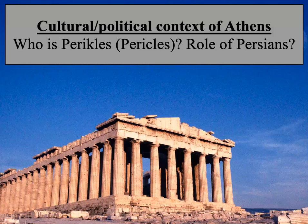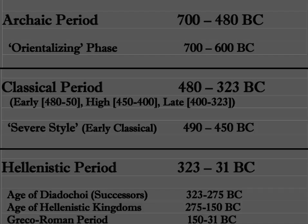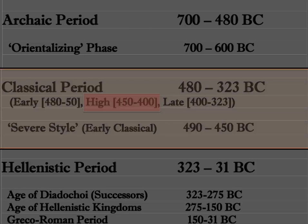The first section is the cultural and political context of Athens — who is Pericles, and the role of the Persians in what ends up happening with the building of the Acropolis and the Parthenon. When looking at ancient Greek history, we touched on some of this in our discussion of the human figure, including the classical period, severe style, and Hellenistic, as well as some archaic period early Greek sculpture. When discussing the building of the Parthenon and Pericles' rebuilding of the Acropolis, we're in the classical period — mostly the high classical period, but we'll be moving throughout.